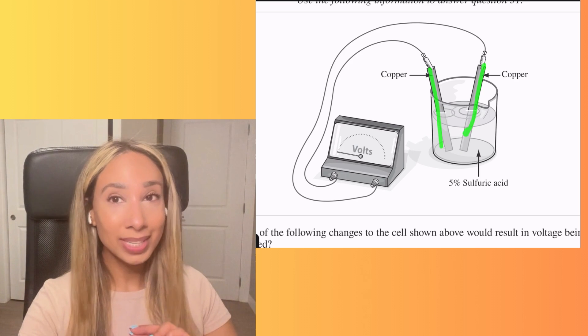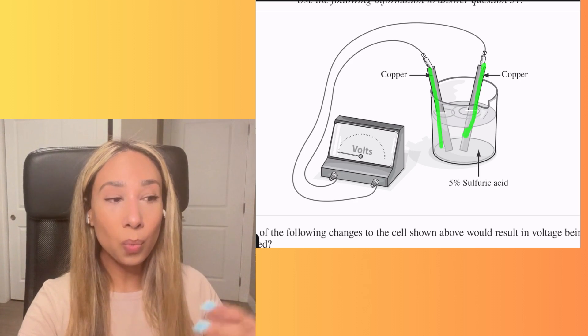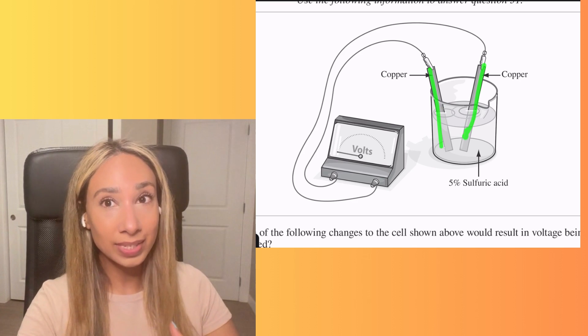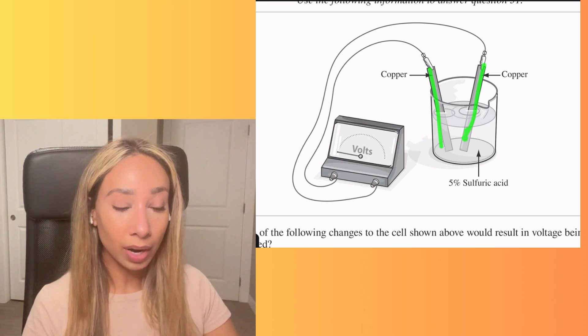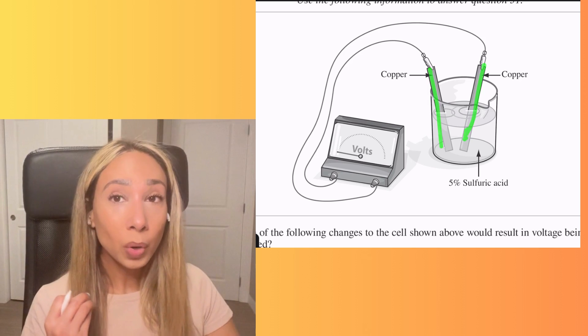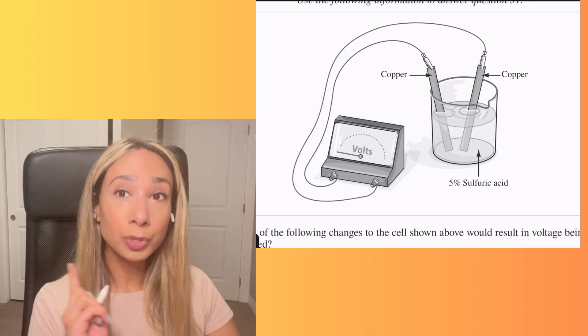So because they're the exact same, that's not going to induce a current. There's no way for the electrons to move from positive to negative. So for this one to work, we're actually going to need to swap it with another electrode, which will help generate the current.